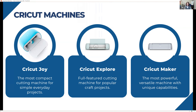Cricut has three different types of cutting machines. We have the Cricut Joy, which is the most compact — great for simple everyday projects. Then the Cricut Explore, which is our most popular machine — a full featured cutting machine for card making, scrapbooks, cutting felt, over a hundred different materials. If you want to go more advanced, there's the Cricut Maker, the most versatile machine with unique capabilities: a quick swap cutting tool, rotary cutter, debossing, and an etching tool, just to name a few.